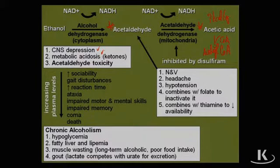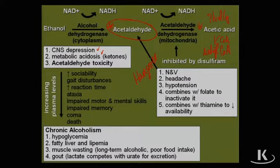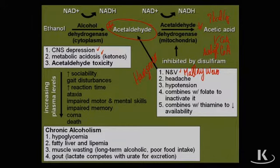Ethanol itself is a strong CNS depressant and will cause metabolic acidosis, particularly ketoacidosis, and has the unique metabolite acetaldehyde with its own specific toxicities. Acetaldehyde buildup is responsible for the hangover effect, consisting primarily of severe nausea and vomiting. In severe intoxication, patients may develop Mallory-Weiss — longitudinal tears along the lower esophagus causing severe bleeding — or even Boerhaave syndrome, a complete disconnection between the esophagus and the stomach due to retching.